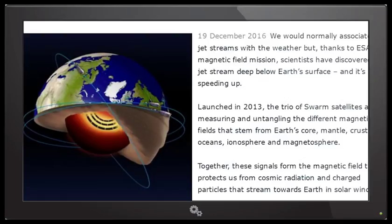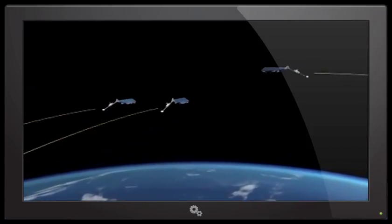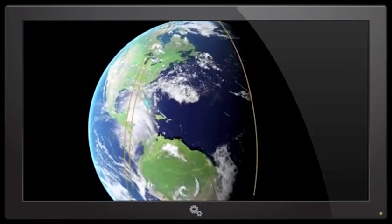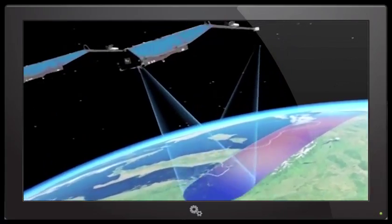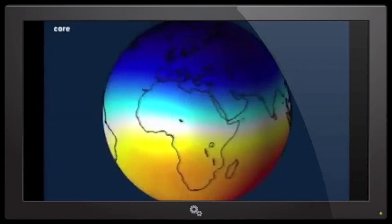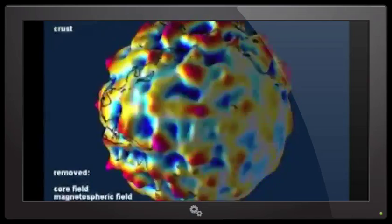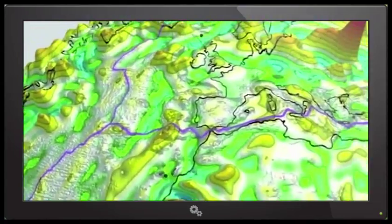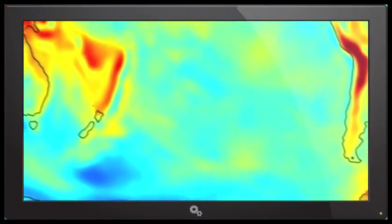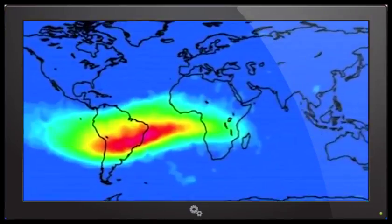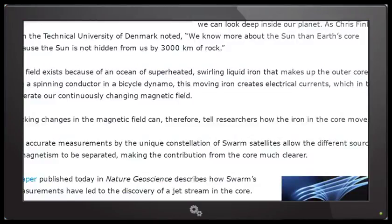But thanks to ESA's magnetic field mission, scientists have discovered a jet stream deep below Earth's surface, and it's speeding up. Launched in 2013, the trio of Swarm satellites are measuring and untangling the different magnetic fields that stem from Earth's core, mantle, crust, oceans, ionosphere, and magnetosphere. As Chris Finlay from Technical University of Denmark noted,